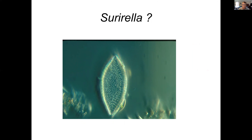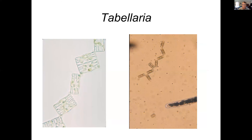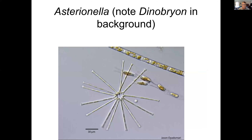Surirella is another one. Tabularia kind of looks like diatoms stuck together, and these are all girdle views. Asterionella is really common in springtime in lakes — it's a long, skinny one that stays attached at the ends and goes around in a circle, making that little star shape.